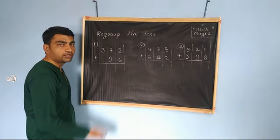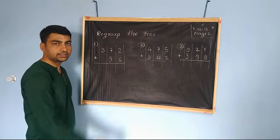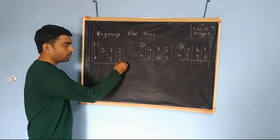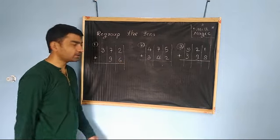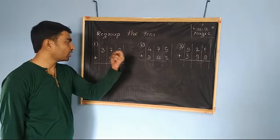We will take the first example: 372 plus 96. Let's do addition. 2 plus 6. You can use your finger. Keep the big number in mind and for the small numbers, use your finger to count ahead.